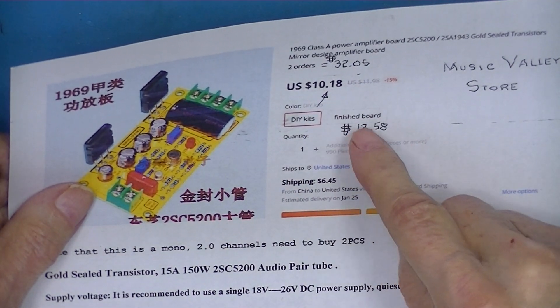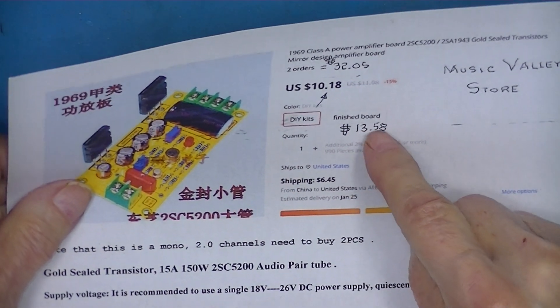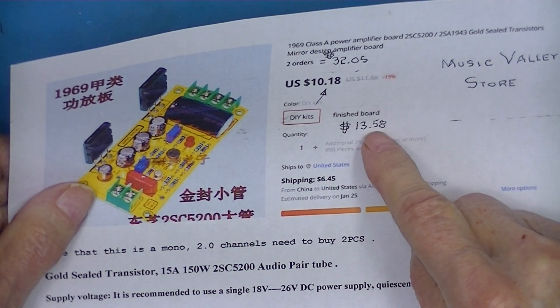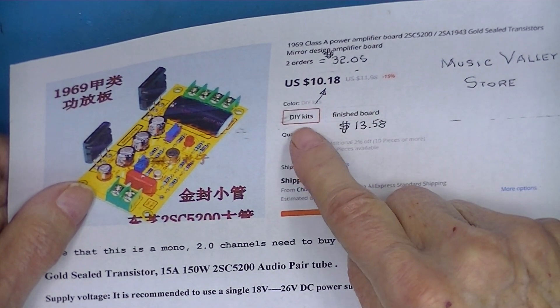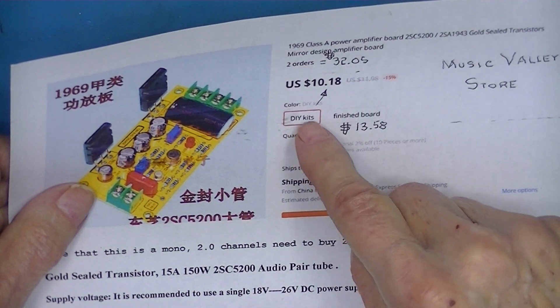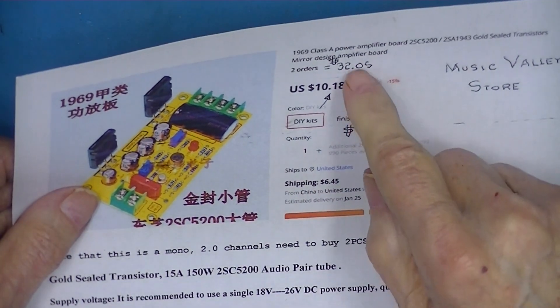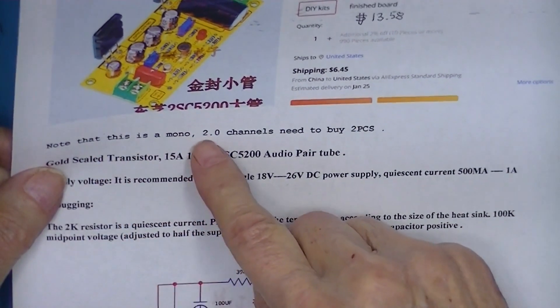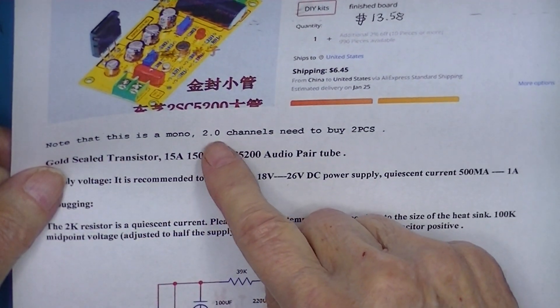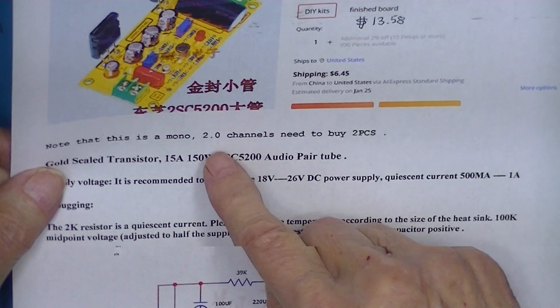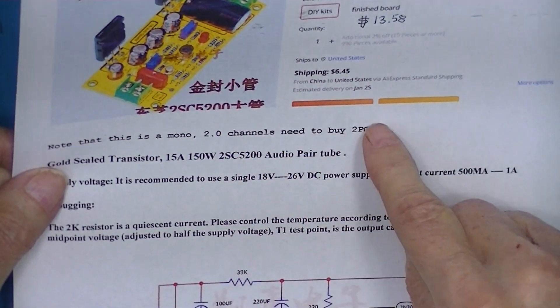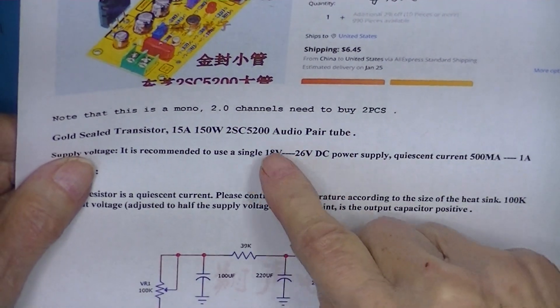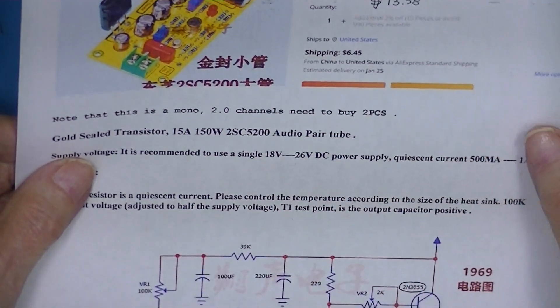I bought a finished board, well two of them. $13.58 a piece versus $10.18 a piece, and the total order came to $32.05. They do mention here that you've got to buy two. 2.0 channels, to get two channels you need to buy two pieces. This refers to the pair of output transistors.